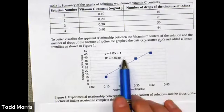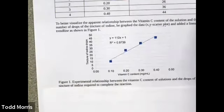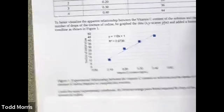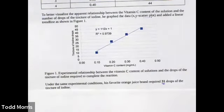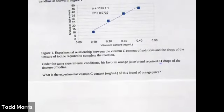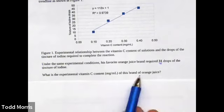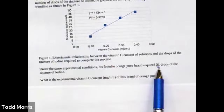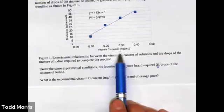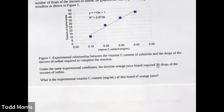Now that we have this equation, he repeated the same experiment with his unknown — his favorite brand of orange juice — and determined that under the same experimental conditions, it required 31 drops of tincture of iodine. From this information, we want to determine the experimental vitamin C content of this orange juice. We can do this because we have an equation that relates the number of drops of iodine to the vitamin C content we're trying to find.